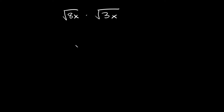What's up, you freaking geniuses! In this video I'm going to teach you how to multiply radicals that have variables and exponents in them. Let's start with this problem right here: the square root of 8x times the square root of 3x.